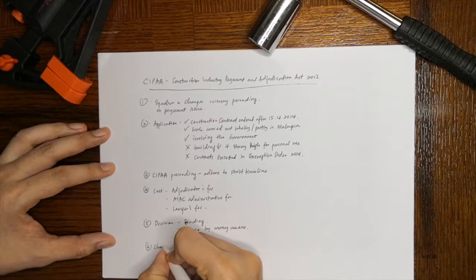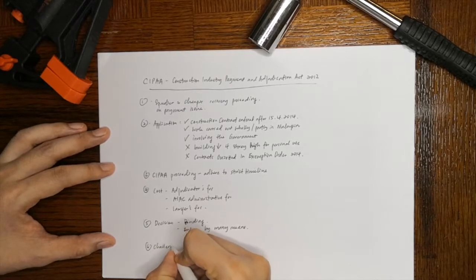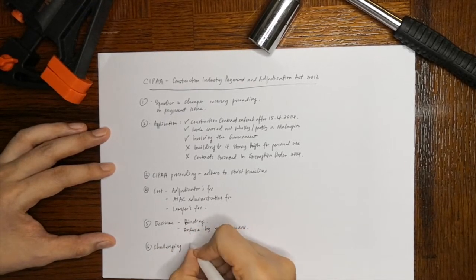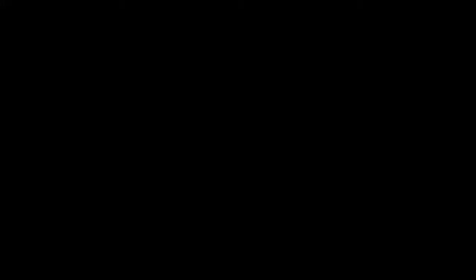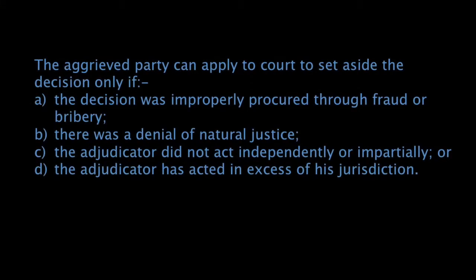The aggrieved party can apply to court to set aside the decision only if the decision was improperly procured through fraud or bribery, there was a denial of natural justice, the adjudicator did not act independently or impartially, or the adjudicator has acted in excess of his jurisdiction.